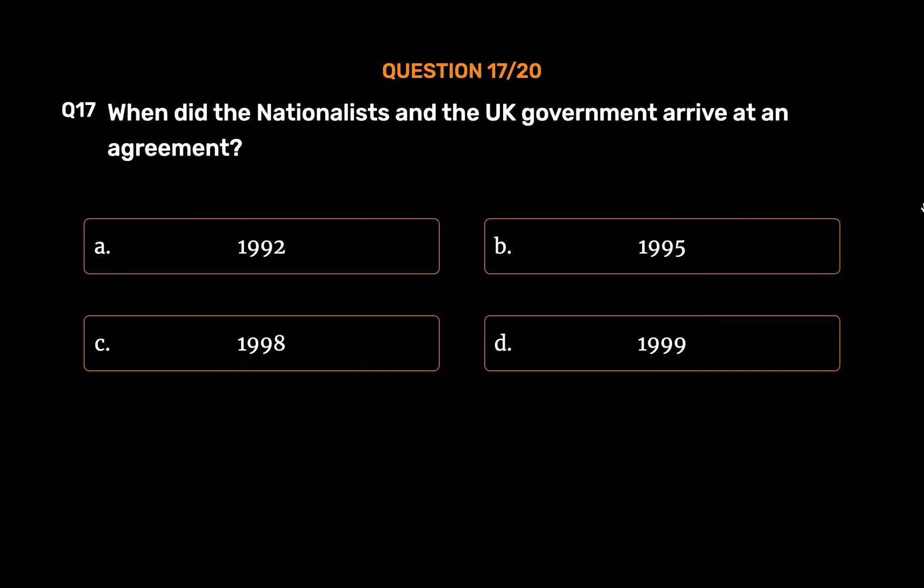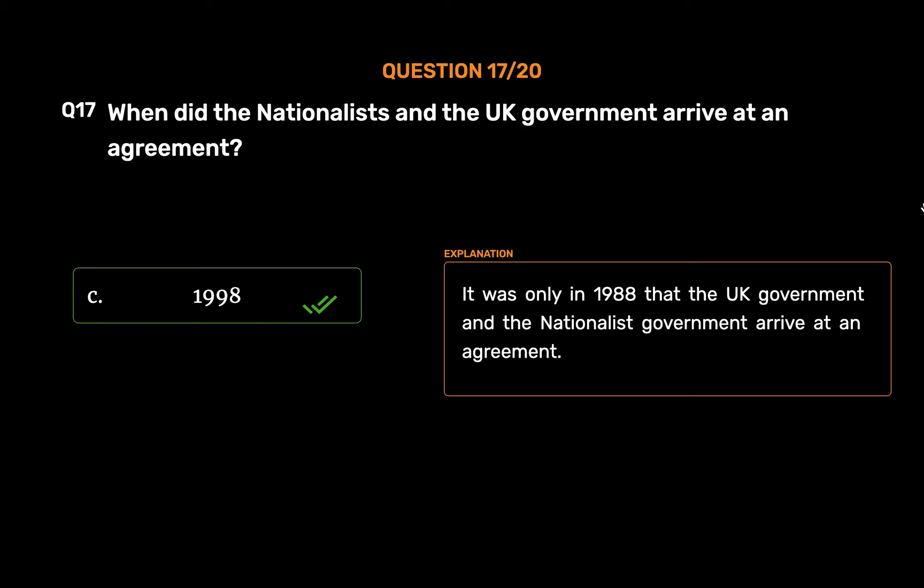The correct answer is Option C: 1998. It was in 1998 that the UK government and the nationalist government arrived at an agreement.